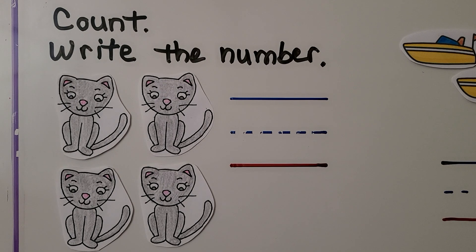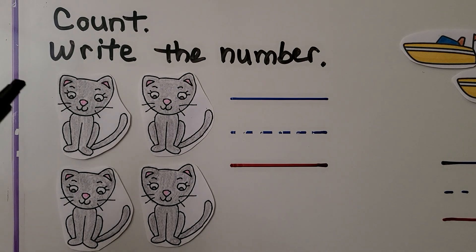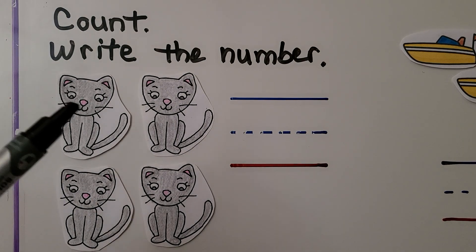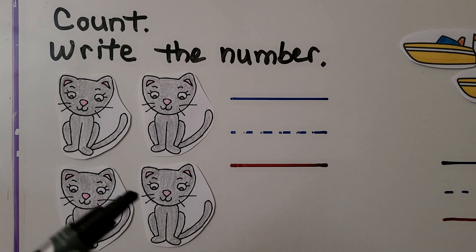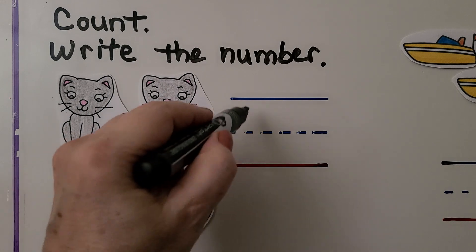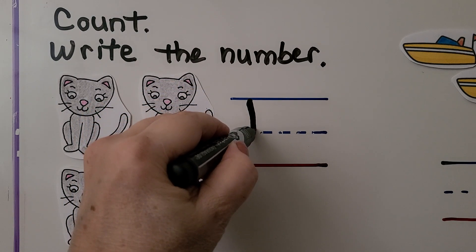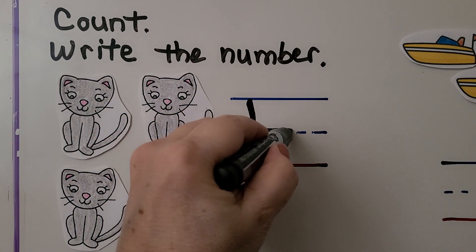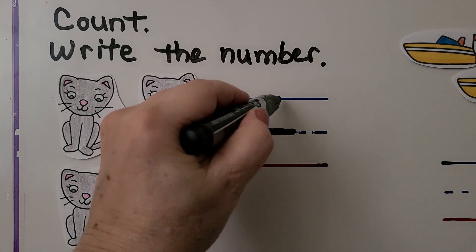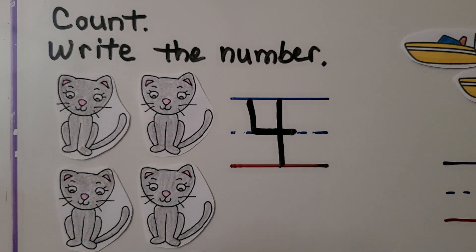We need to count the cats and write the number. I see one, two, three, four cats. We need to write the number four. We start here, we come down to the middle line and go across, and then we come straight down. Four. Four cats.